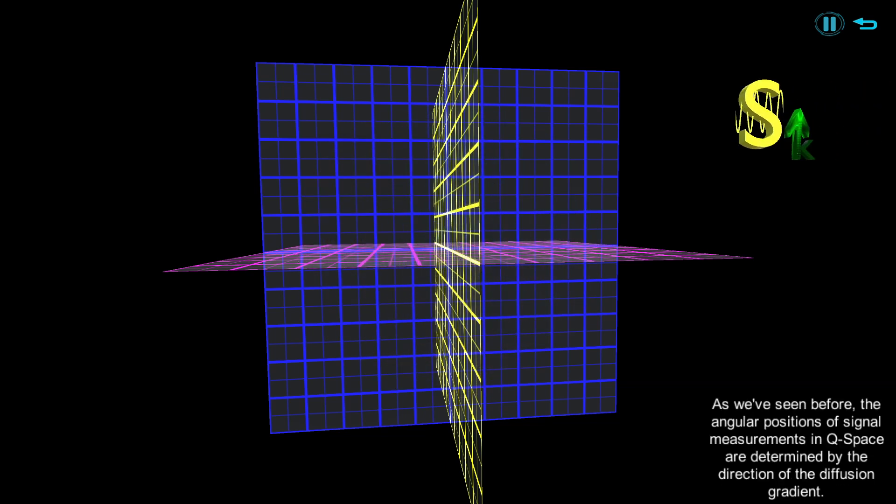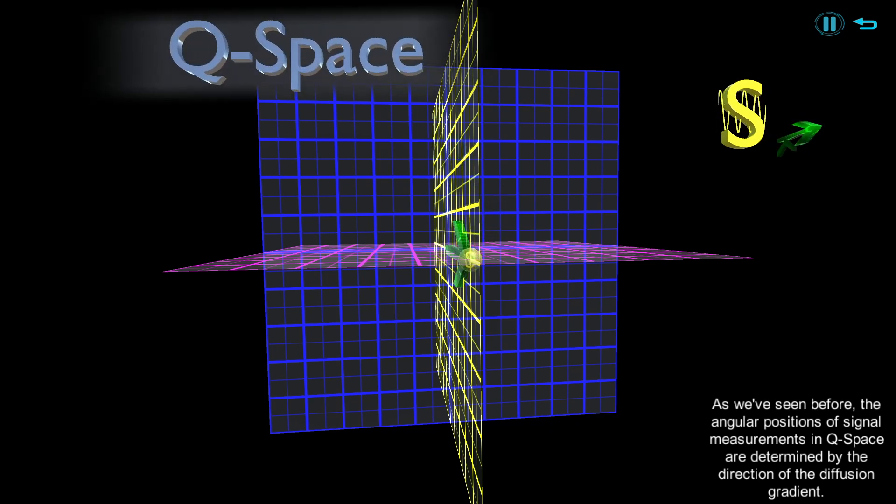As we've seen before, the angular positions of signal measurements in Q-space are determined by the direction of the diffusion gradient.